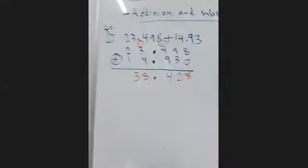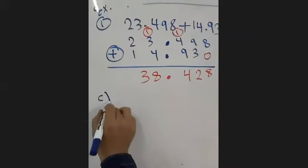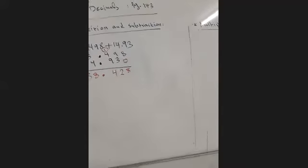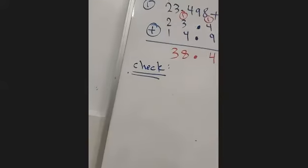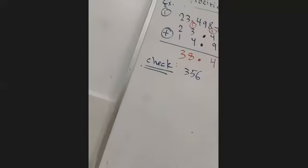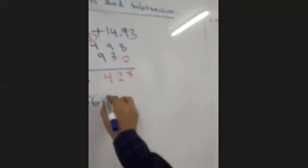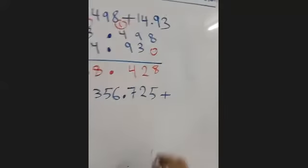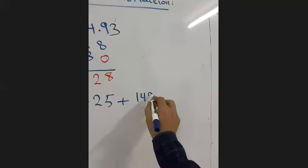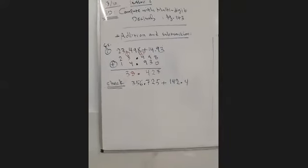So to add, we put the decimals over each other, align the numbers, then add normally. This is example one — we've checked it. Under example one, do the check question. Align the two decimals and add them.